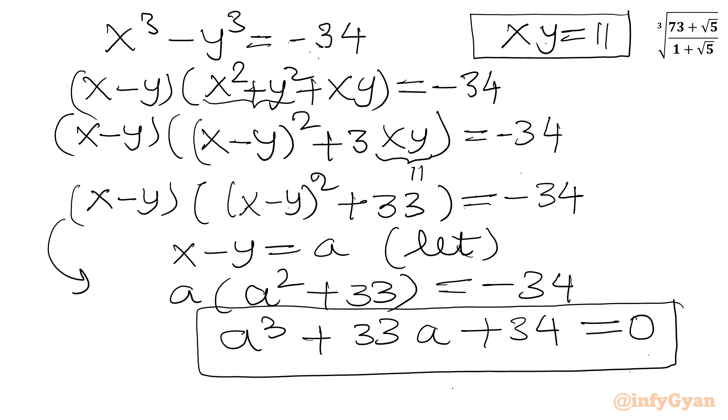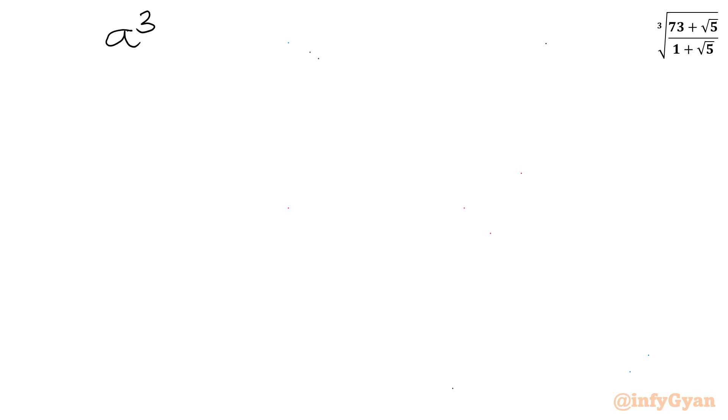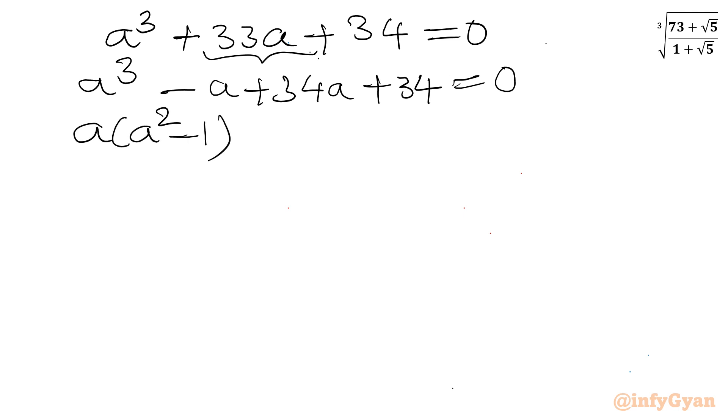I will solve using factorization method. So let me write here a cube plus 33a plus 34 equal to 0. I can split 33a as minus a plus 34a, and then we have 34. Now a is common, so a square minus 1 will be in the bracket. 34 is common here from last two terms. So a plus 1 will be in the bracket. Now we can write a plus b times a minus b, plus 34 times a plus 1 equal to 0.